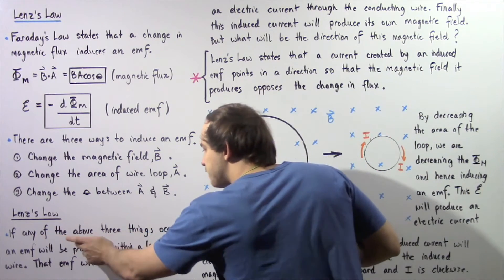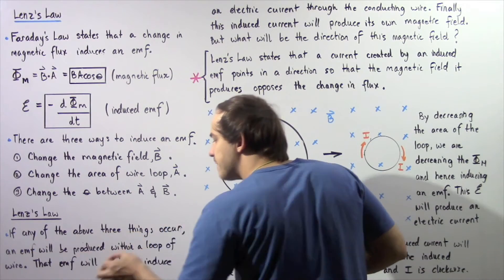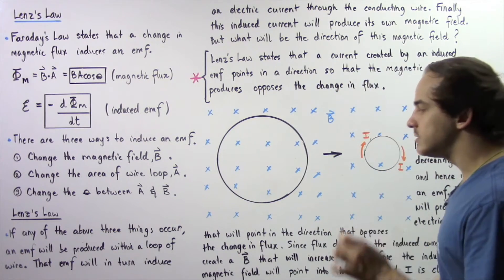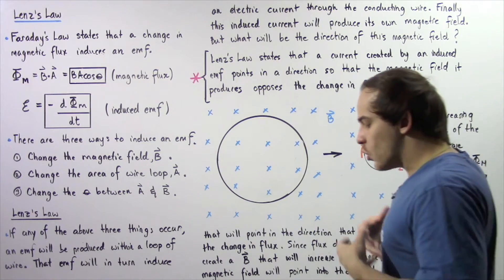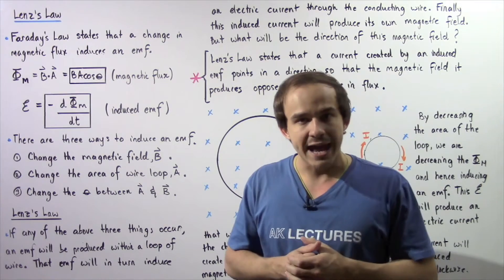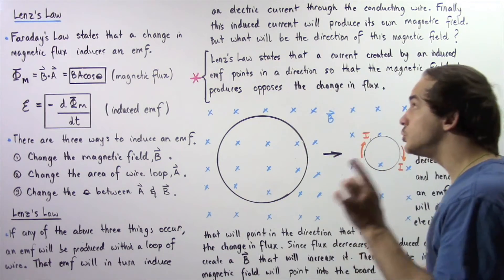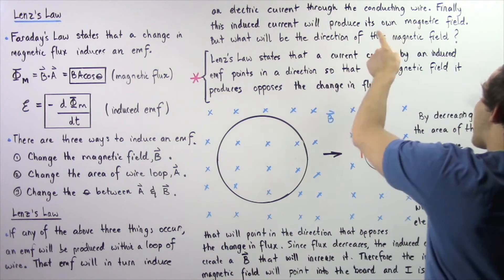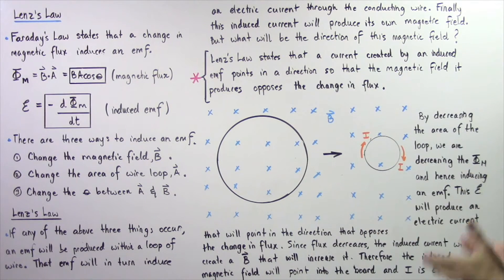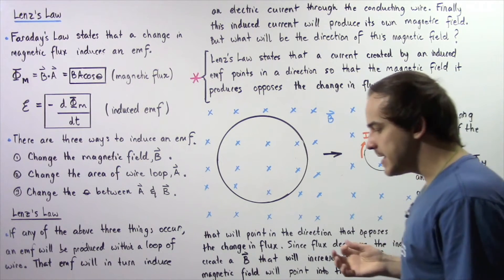If any of these three things take place, an EMF will be induced within a conducting loop of wire. Now that we have induced an EMF within our wire, what takes place next? This induced EMF will in turn produce an electric current through that conducting wire, and finally, that electric current will produce its own magnetic field. Let's call this the induced magnetic field.